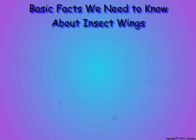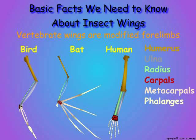As shown in the previous scene, the wings of birds and bats are modified forelimbs. Here we see the structures of vertebrate forelimbs showing the common bones and the relationships between the two types of wings and the human arm.